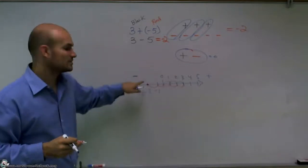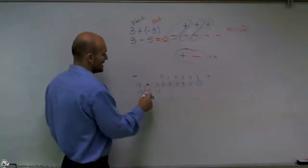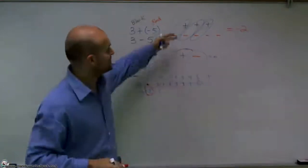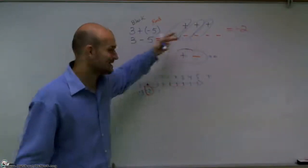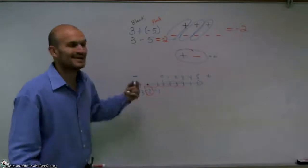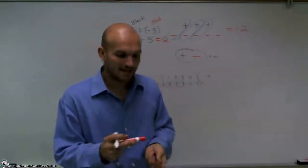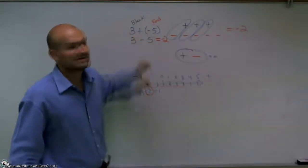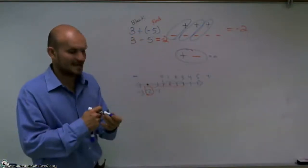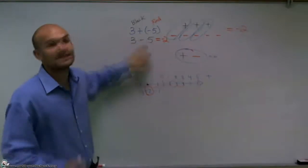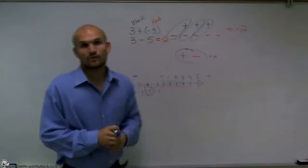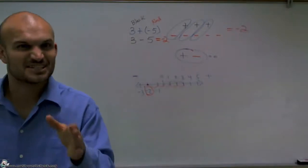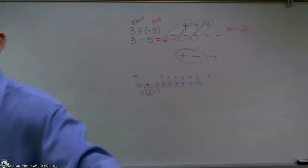And again, if you look, you end up at negative 2. So there, ladies and gentlemen, I gave you one visual representation, two representations, and also one dealing with money that'll help you understand that 3 plus a negative 5 gives you negative 2. You can also just rewrite it as a subtraction problem and work from there. So there you go. Get those addition and subtraction problems done. Let's do it.